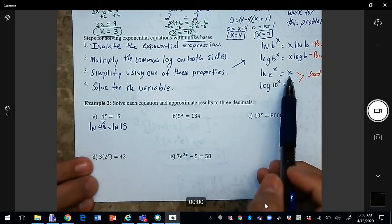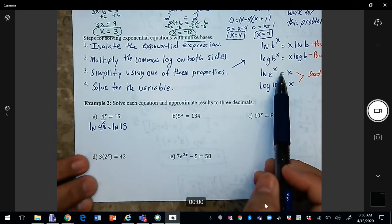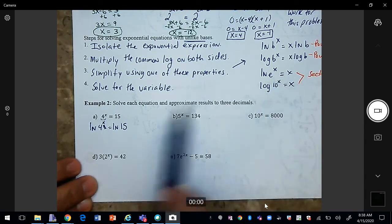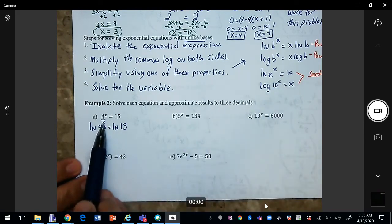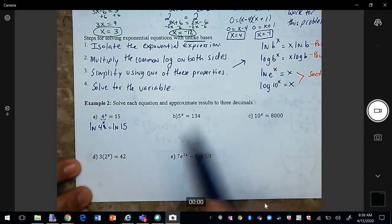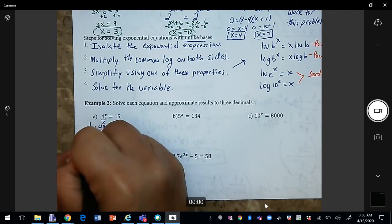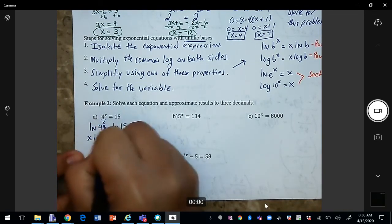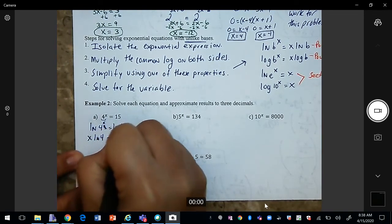Now we can apply one of these properties. And the property I'm going to apply is we can use the power rule and bring the x to the front. So I can use this property here. So I'm going to have x natural log of 4 is equal to natural log of 15.